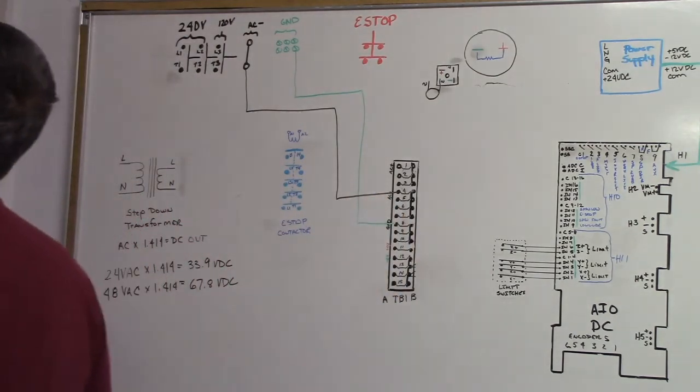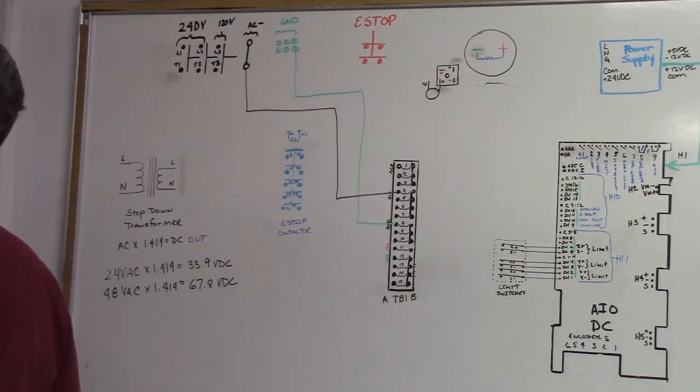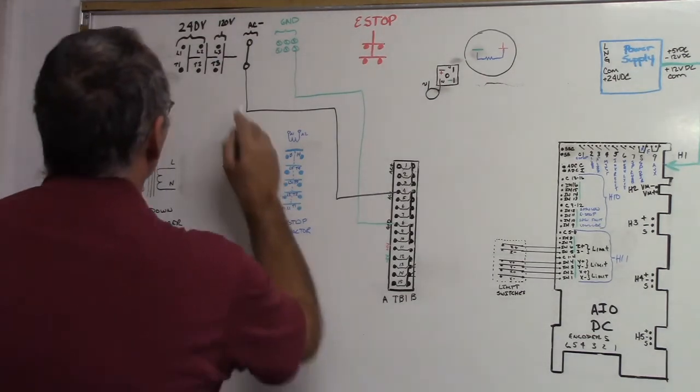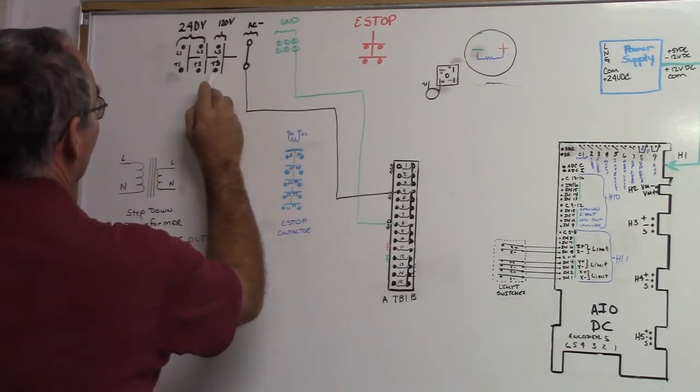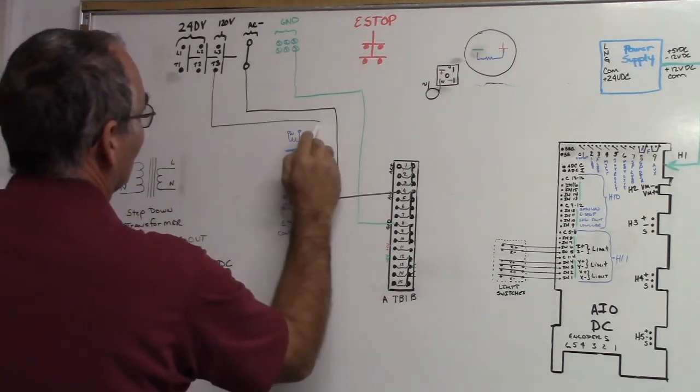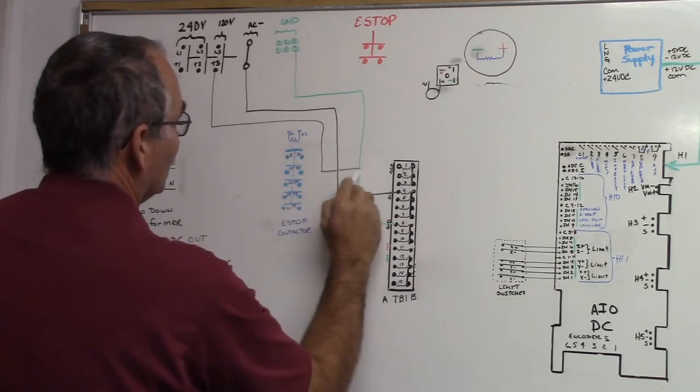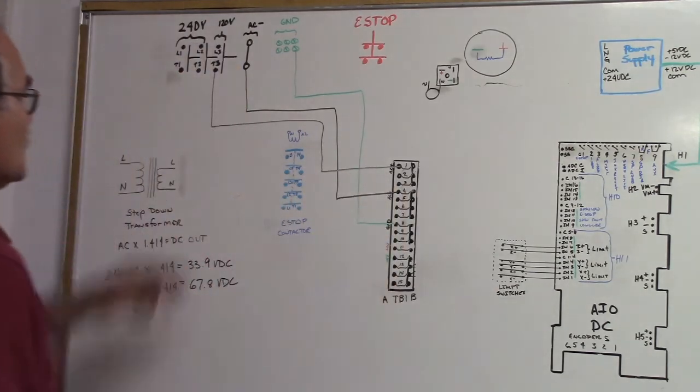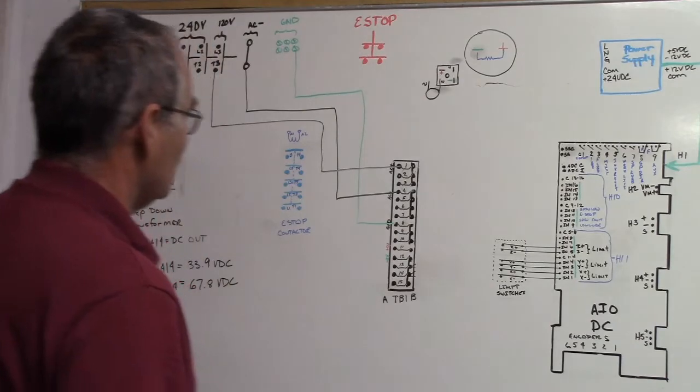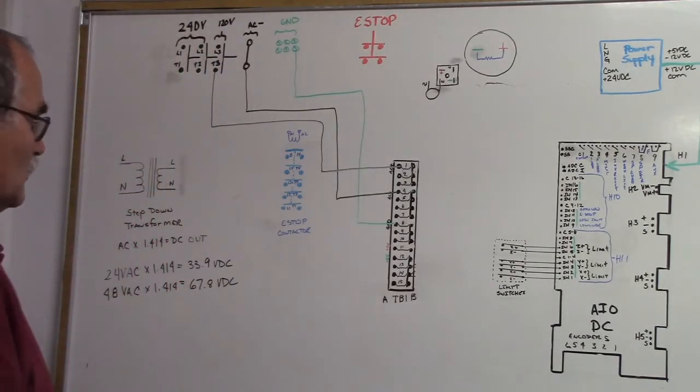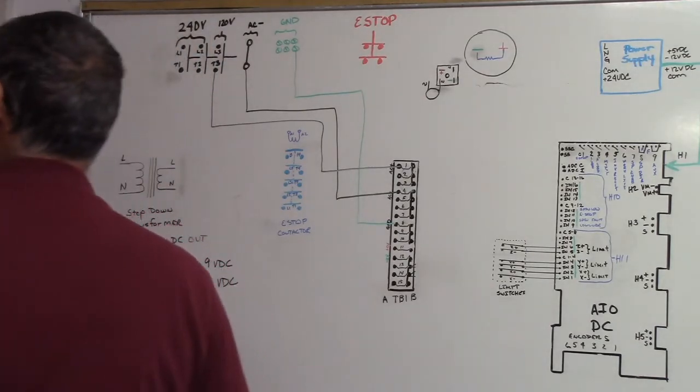And then our AC plus is going to TB1-1a. So here's our 120 volt AC plus going to TB1-1a. So now we've got our voltage down to our TB1 terminal block.